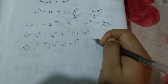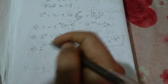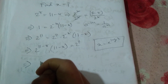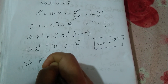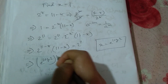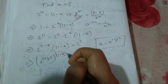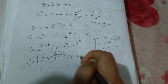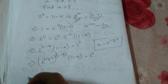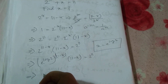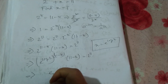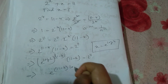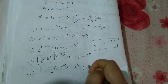Now I apply the identity x equals e to the power (log x). So 2 becomes e to the power (log 2). Substituting, we get e to the power (log 2) raised to (11 minus x), multiplied by (11 minus x), equals 2 to the power 11. This simplifies to e to the power ((11 minus x) log 2) times (11 minus x) equals 2 to the power 11.